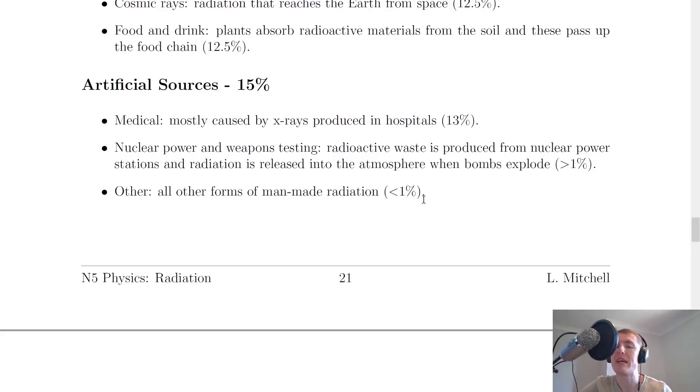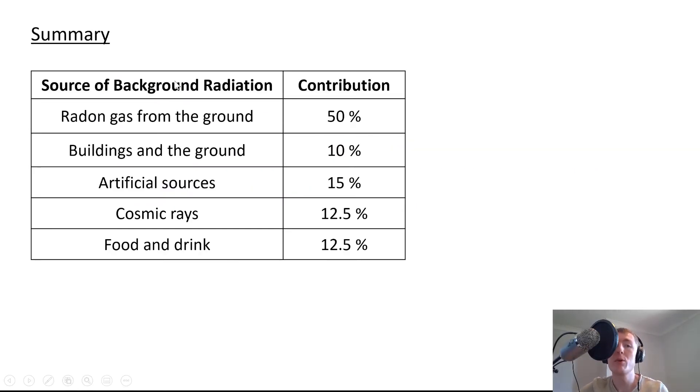So just to summarise this in a table, we have our sources of background radiation here and their percentage contribution. So we have radon gas from the ground contributes about 50%. Buildings and the ground contributes about 10%. Artificial sources, about 15%. Remember that's made up of medical x-rays for example, and nuclear power and weapons testing.